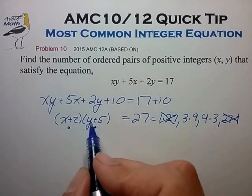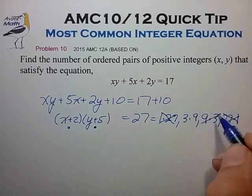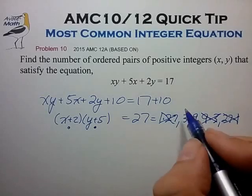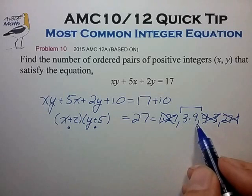We also notice that the second factor, y + 5, has to be six or larger, which doesn't match up with this factor pair. So we've reduced the number of possible factor pairs to just one: 3 × 9.